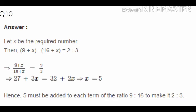Question 10: What number must be added to each term of the ratio 9:16 to make it 2:3? Let x be the number. Then (9 + x):(16 + x) = 2:3. Writing as a fraction and cross-multiplying gives x = 5. So adding 5 to both 9 and 16 gives the ratio 2:3.